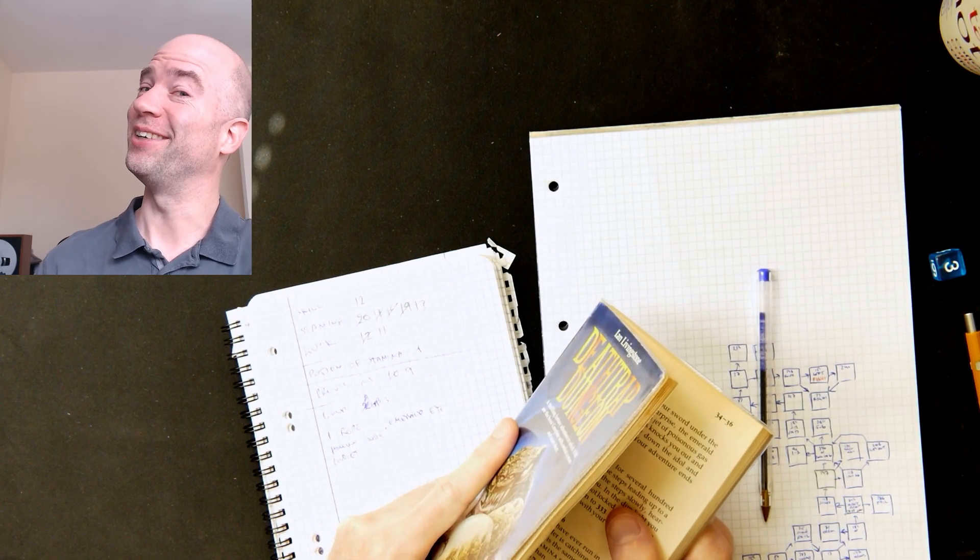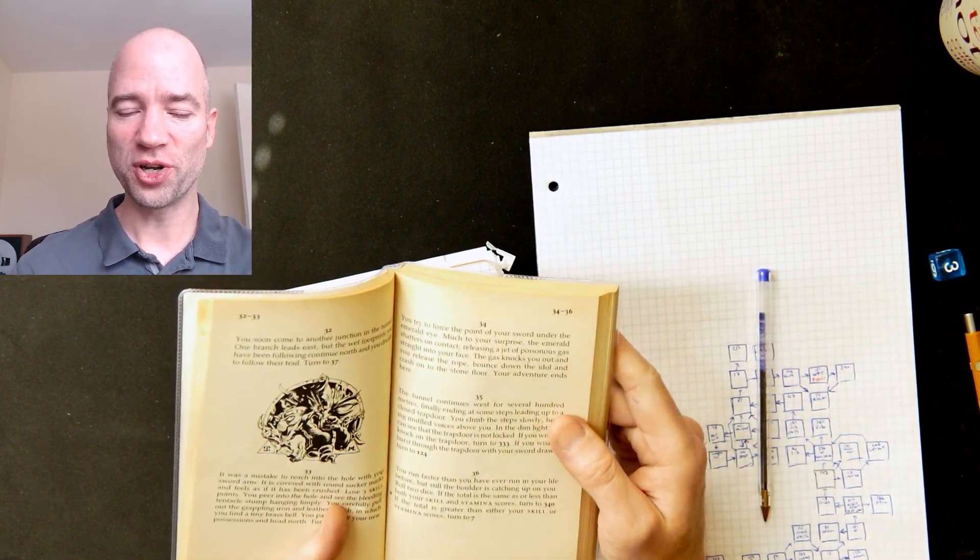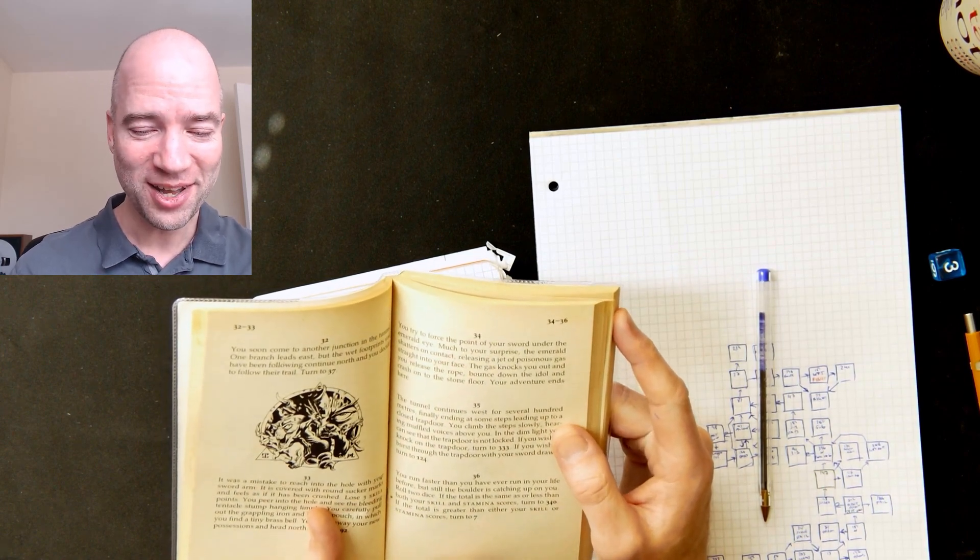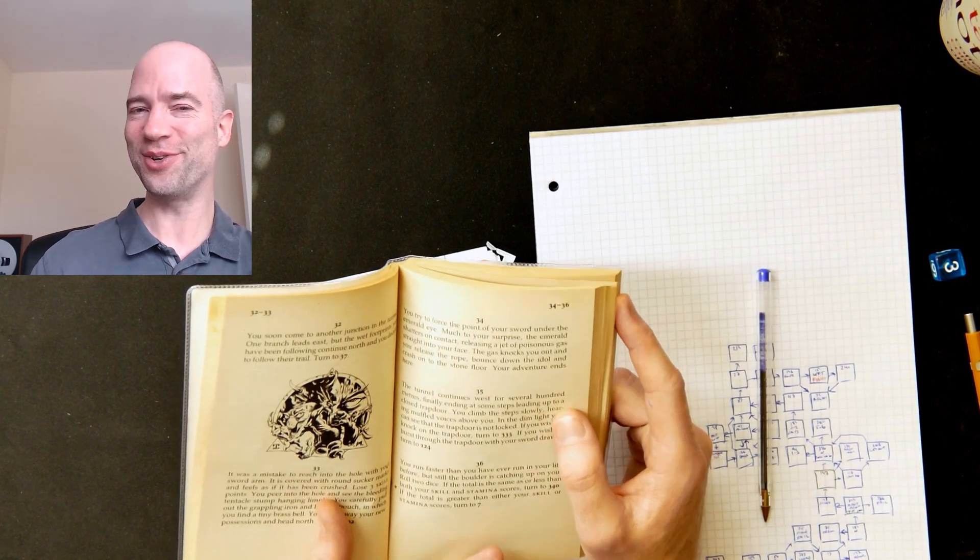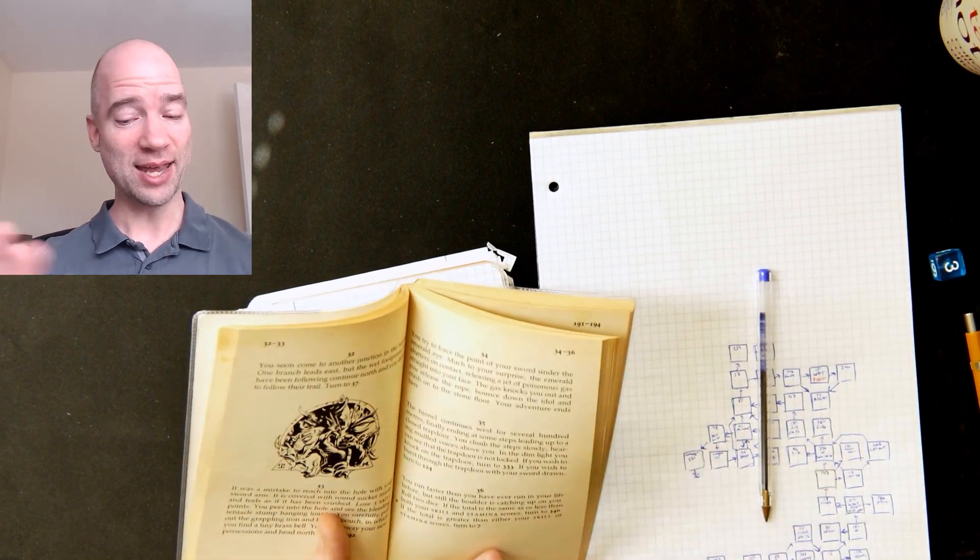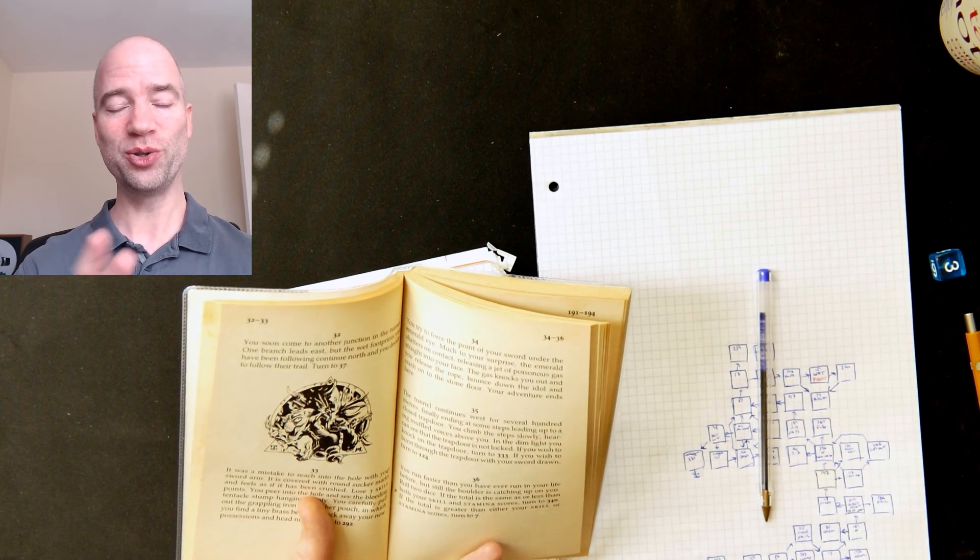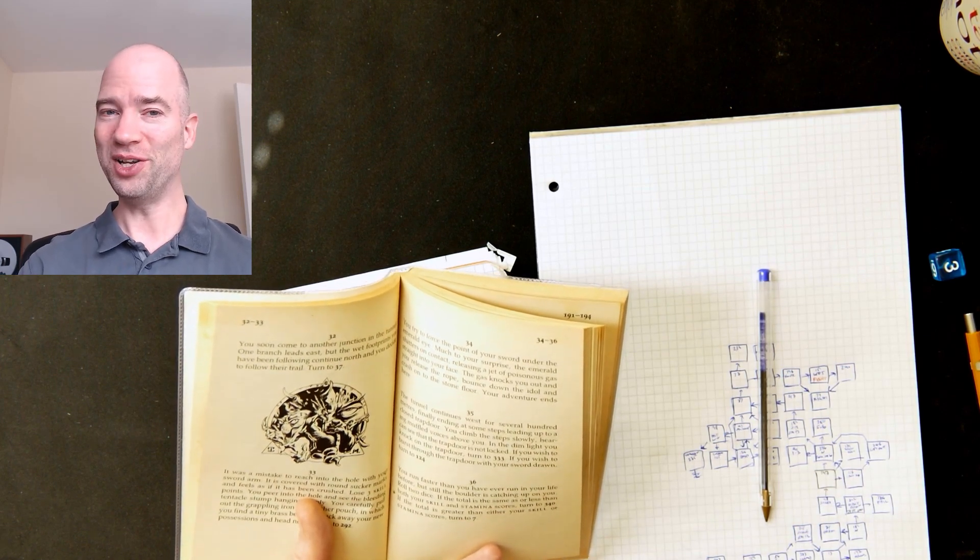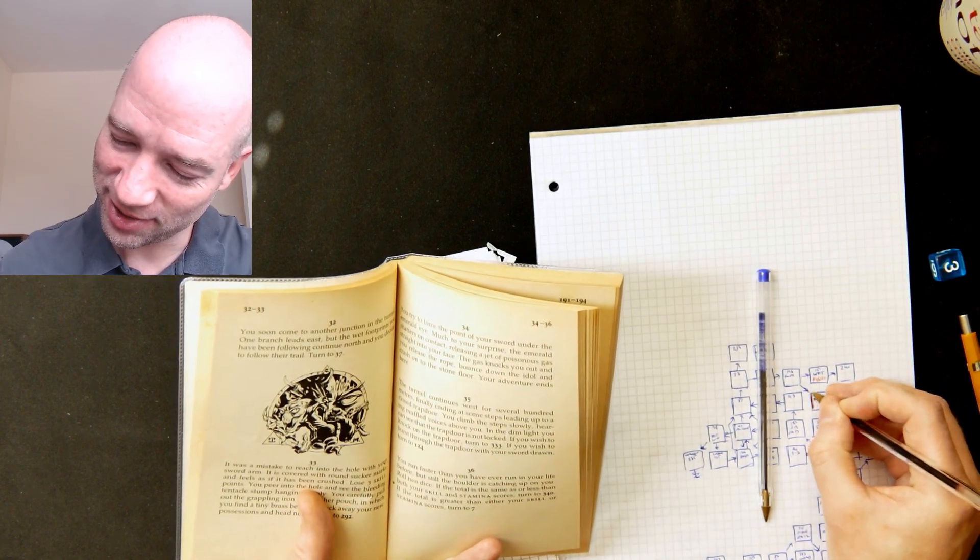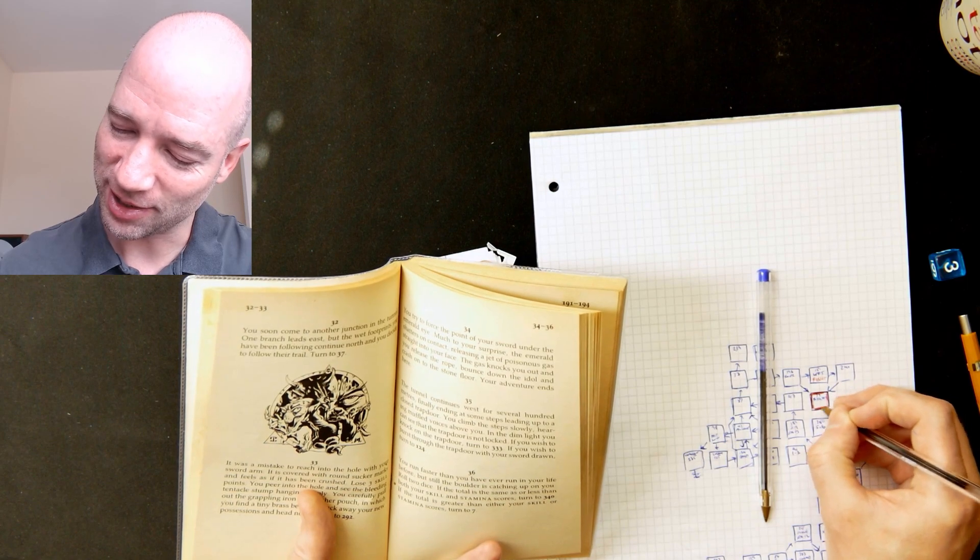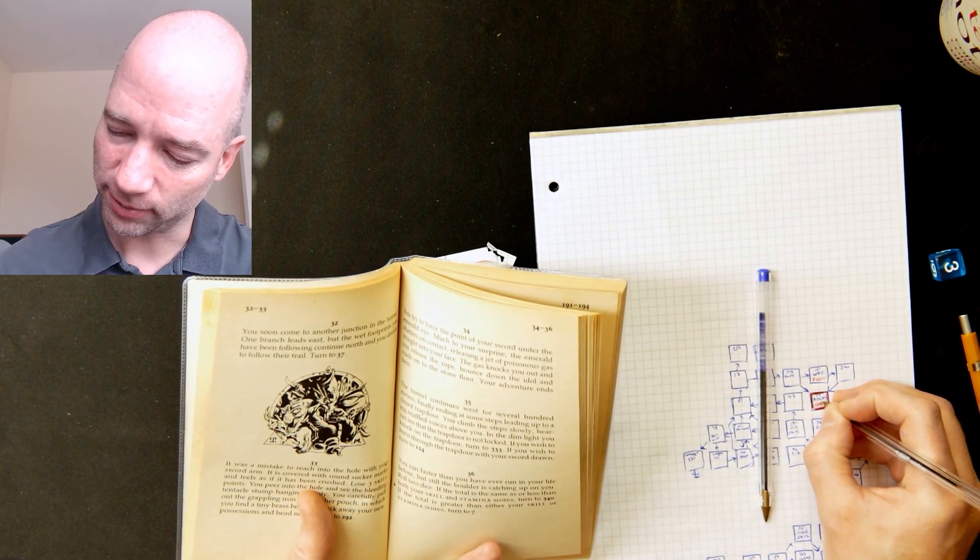You try to force the point of your sword under the emerald eye. Much to your surprise, the emerald shatters on contact, releasing a jet of poisonous gas straight into your face. The gas knocks you out and you release the rope, bounce down the idol, and crash onto the stone floor. Your adventure ends here. Okay, so left eye is actually the right one in this case. So this is death.